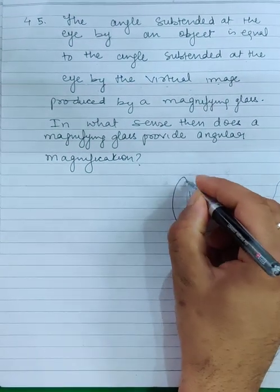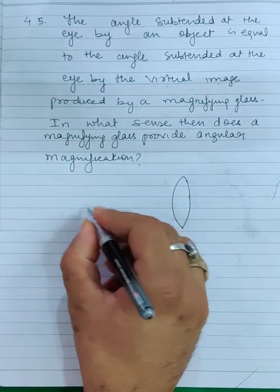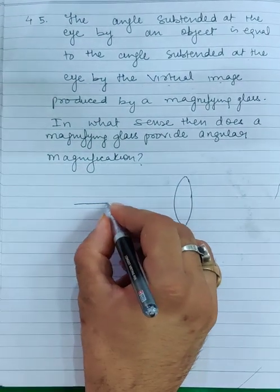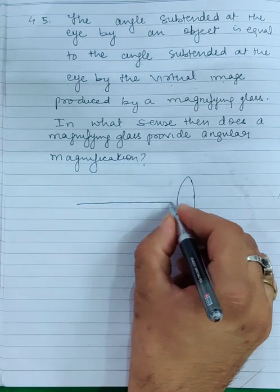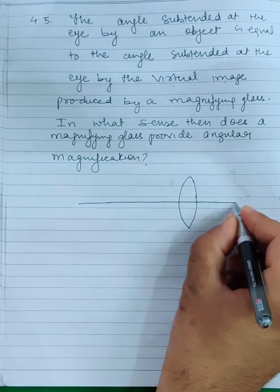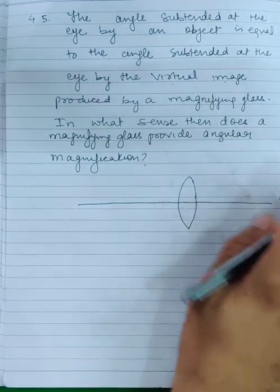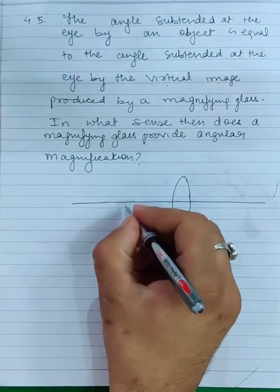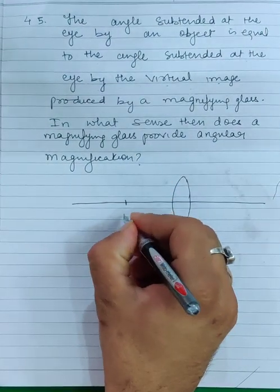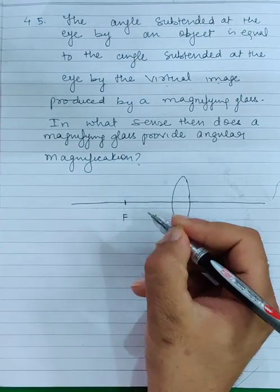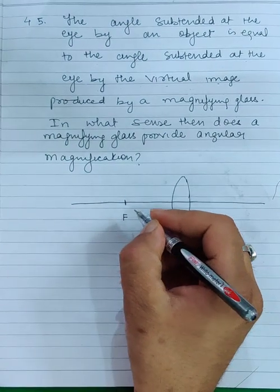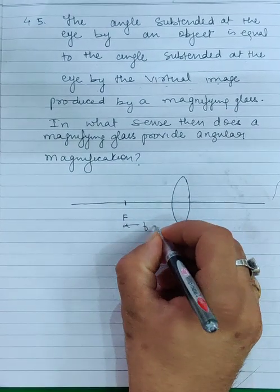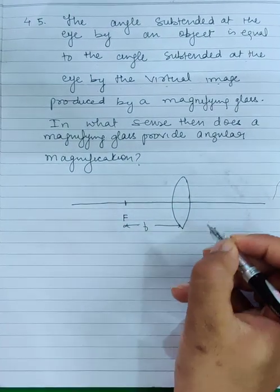This is my convex lens which makes a magnifying glass. This is the focal point of focus. This is the focal length.